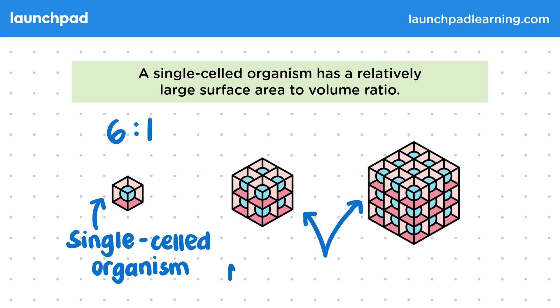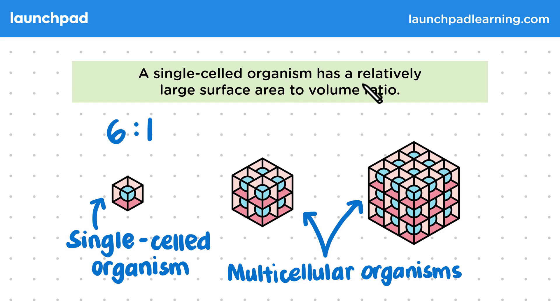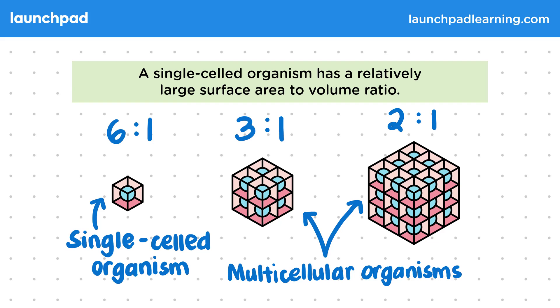These two images represent multicellular organisms — organisms made up of many cells. The surface area to volume ratio for this one is 3 to 1, and for this organism it's 2 to 1.